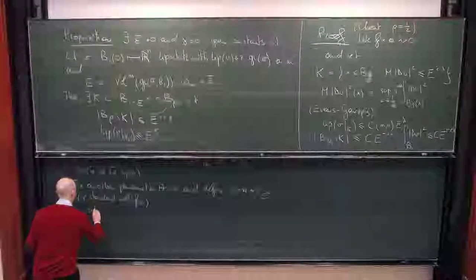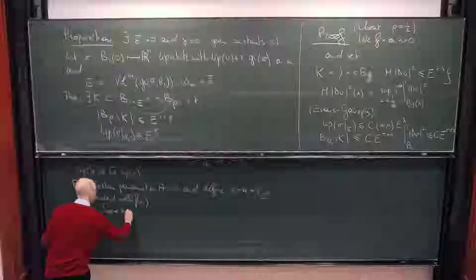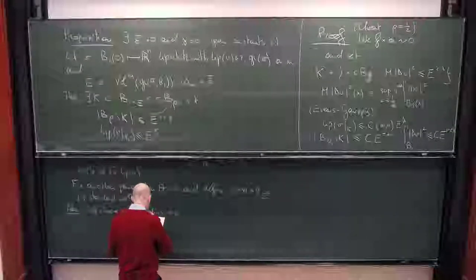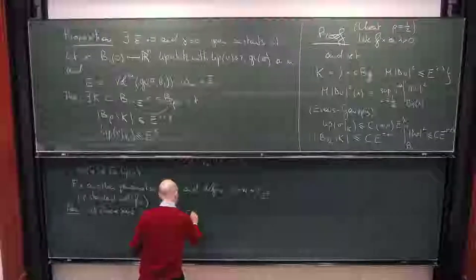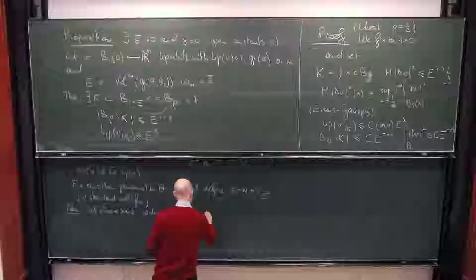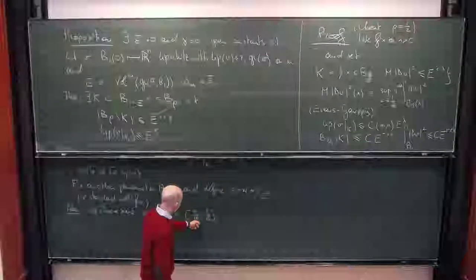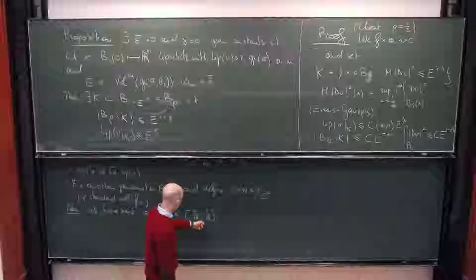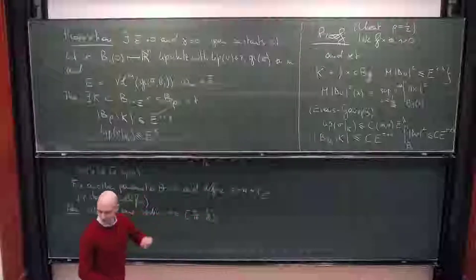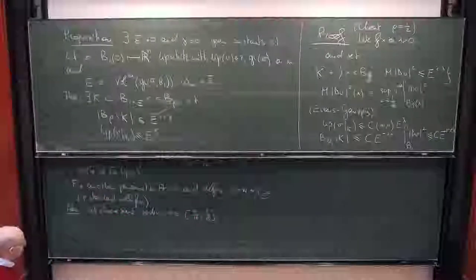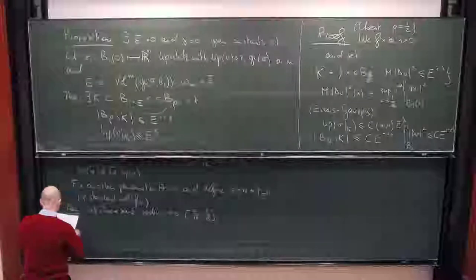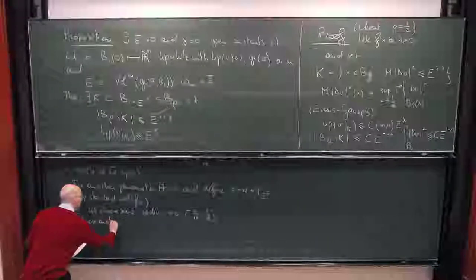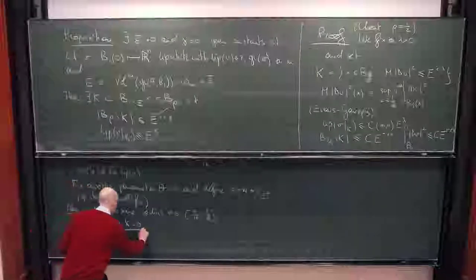This radius sigma is going to be between 9/16 and 5/8 — note that 9/16 is below 3/4 and 5/8 is above 1/2. I will also choose another small parameter kappa bigger than zero. This sigma will be chosen with a Fubini argument.